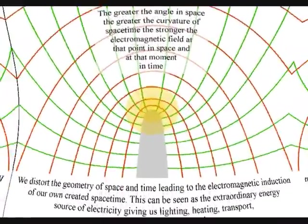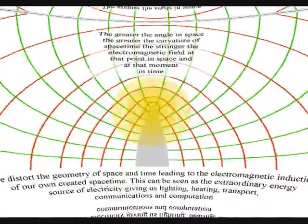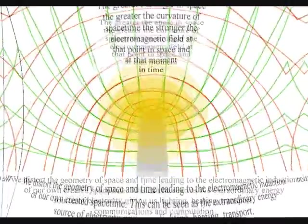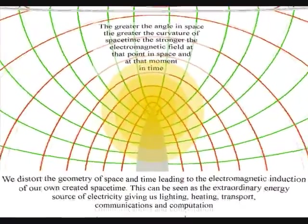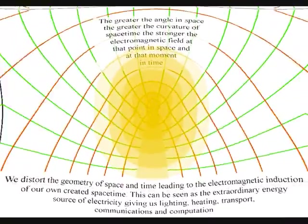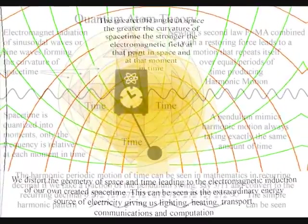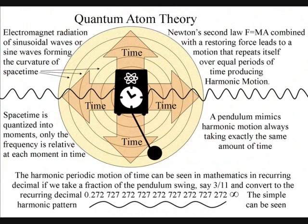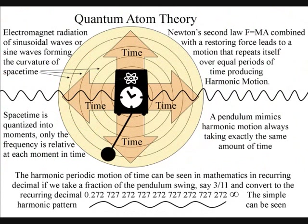This will distort the geometry of space and time, leading to the electromagnetic induction, of our own created space-time, in other words, electricity. The quantum of quantum physics, is the variable of time, forming the geometry and symmetry of space-time.